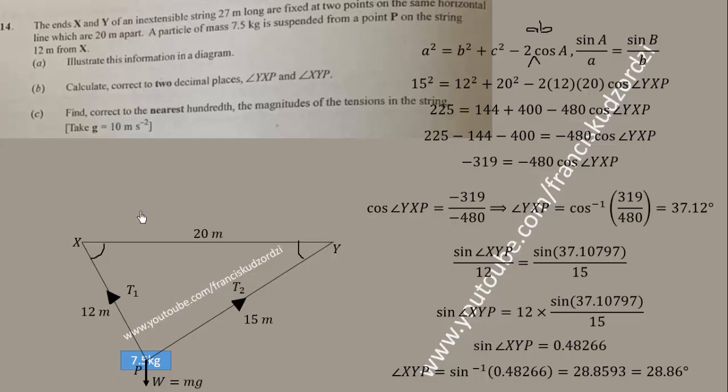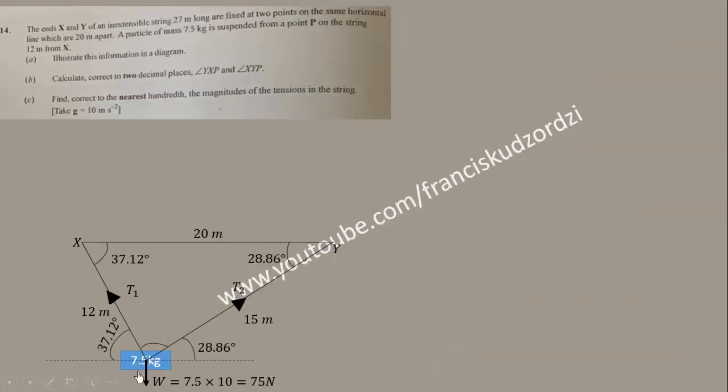What do we do next? We are supposed to find correct to the nearest hundredth, which is the same as two decimal places, the magnitudes of the tensions in the string. We need to calculate the weight and also calculate the tension forces. When we calculate the weight, the weight will be 7.5 times 10, which equals 75 Newtons. Now we have to resolve these tension forces.